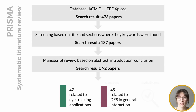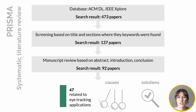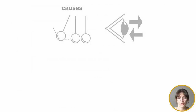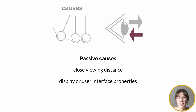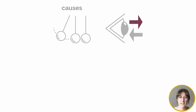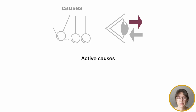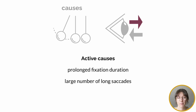In this talk, I will focus on the causes and solutions dominantly regarding gaze-based interfaces. Starting with the set of causes: we found passive causes that are device-based factors, including close viewing distance, display or user interface properties, and the vergence-accommodation conflict that occurs with stereoscopic displays. On the other hand, active causes are the ones that actually stem from using the eyes to perform an input event. For example, multiple gaze commands or frequently switching between gaze interaction techniques can cause eye strain. The two main active causes extracted from the reviewed papers are prolonged fixation duration and a large number of long saccades.